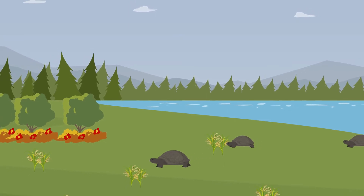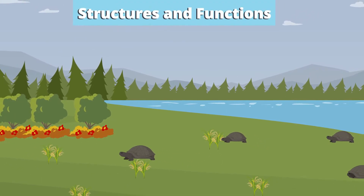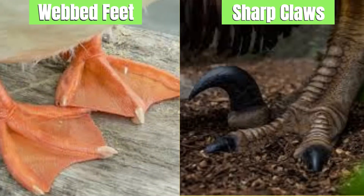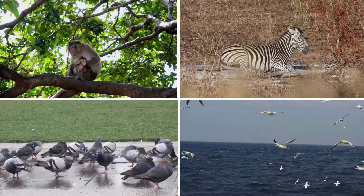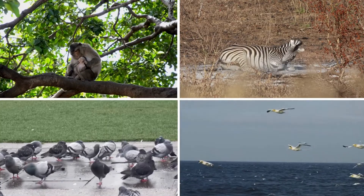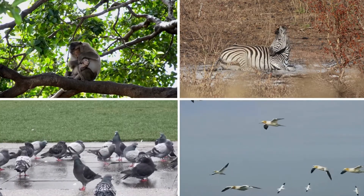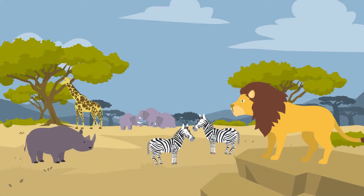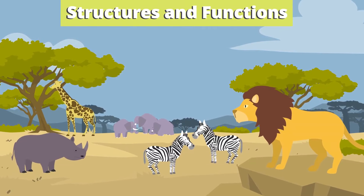Did you know that plants and animals have specific structures and functions that help them survive in their environment? From webbed feet to sharp claws, every part of an organism serves a purpose that enhances its chances of survival. Hi everyone, this is Ms. Michelle and today we're diving into the world of adaptations — unique features and behaviors that help plants and animals thrive in their environments. We'll be analyzing the structures and functions of different species to understand how they survive in the same habitats.